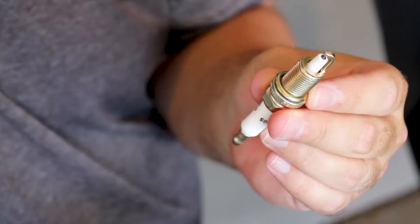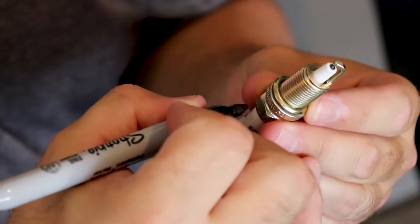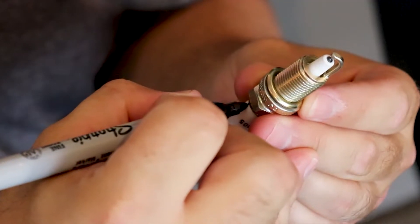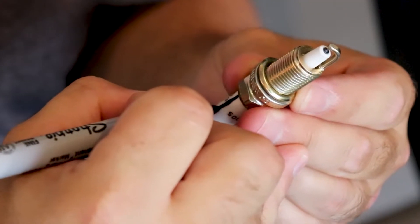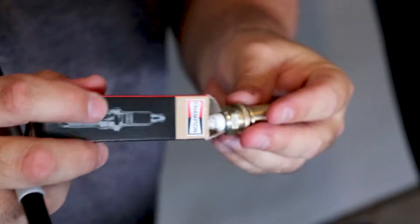Putting our indexing mark on our spark plug is actually pretty easy. We're going to look for the opening in the electrode, and we're going to draw a straight line on the insulator in line with that opening. And we're going to want to do that for each spark plug.